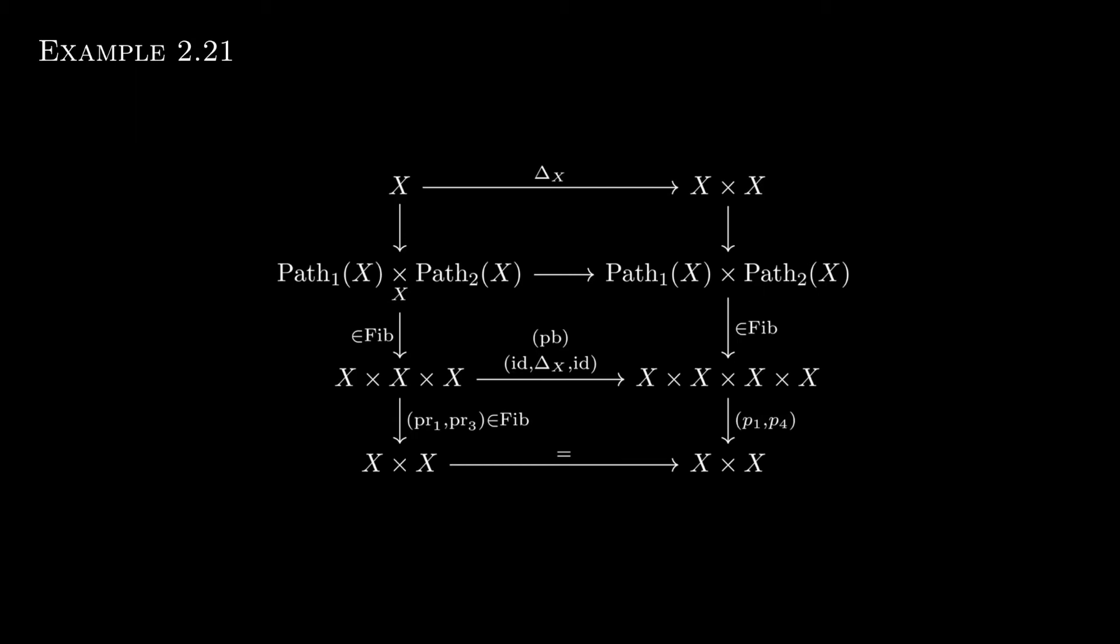But from this, the top left morphism has a weak equivalence by 2 out of 3. So that was just an example.